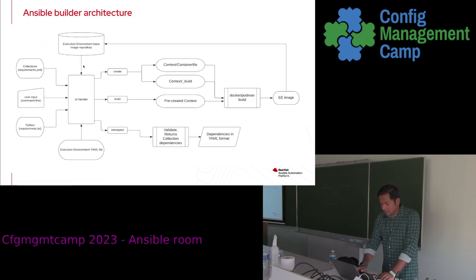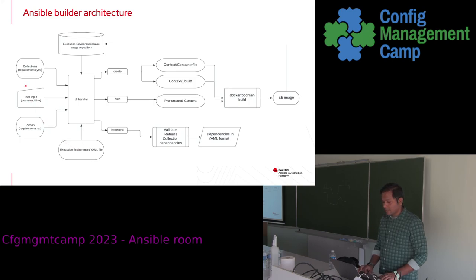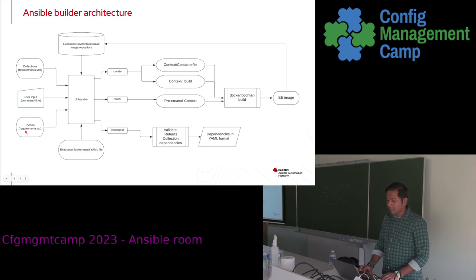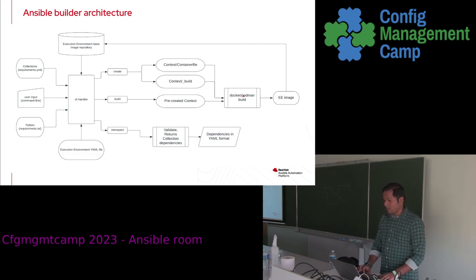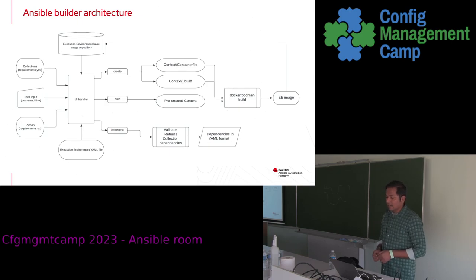This is the Builder architecture. It takes three inputs: the execution-environment.yaml file, which contains collection requirements; requirements.txt for Python dependencies; and the base image you want to use. Ansible Builder supports three sub-commands: create, build, and introspect. Create generates a container file and build context. Build takes this context and generates an image using docker build or podman build underneath. Introspect goes through each of the Ansible collections subdirectories, validates the dependency list, and returns it to the user.